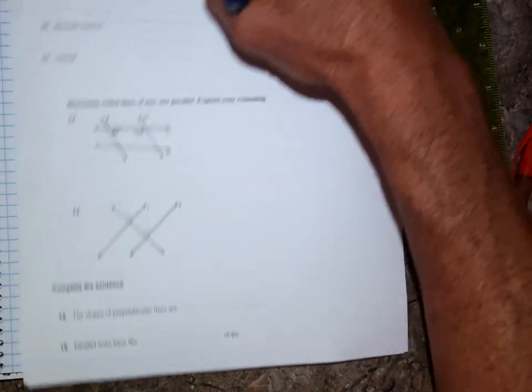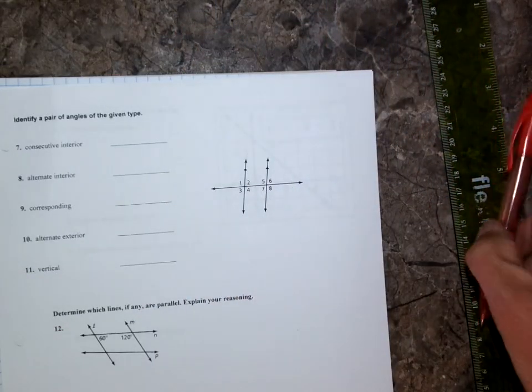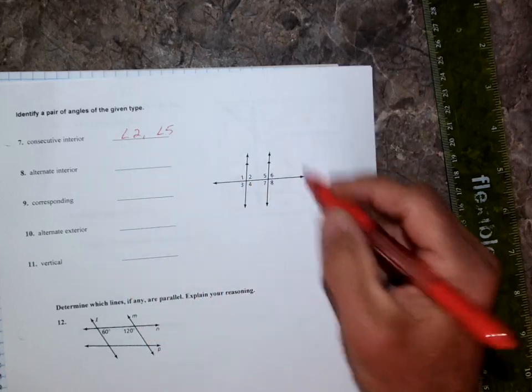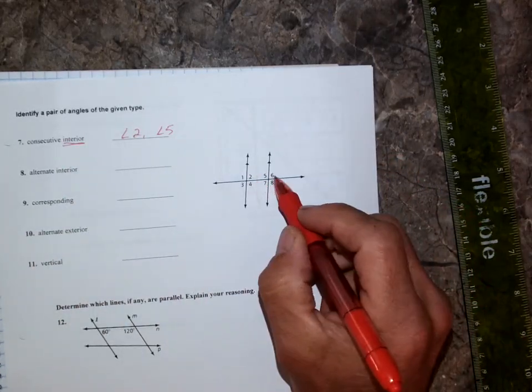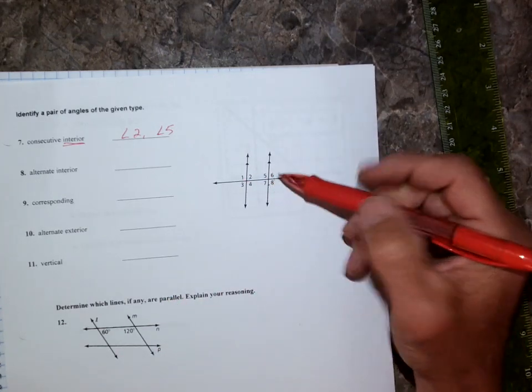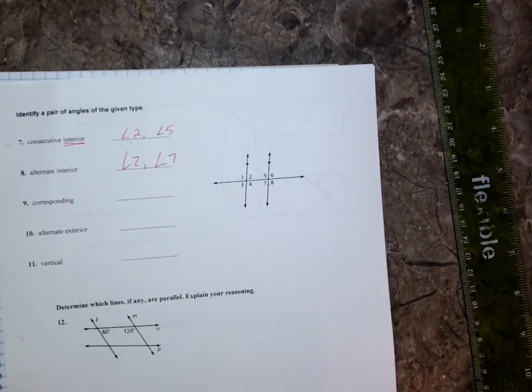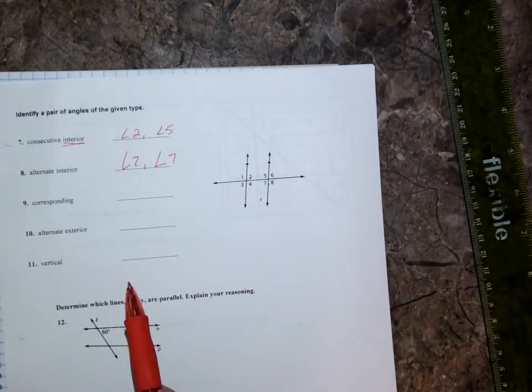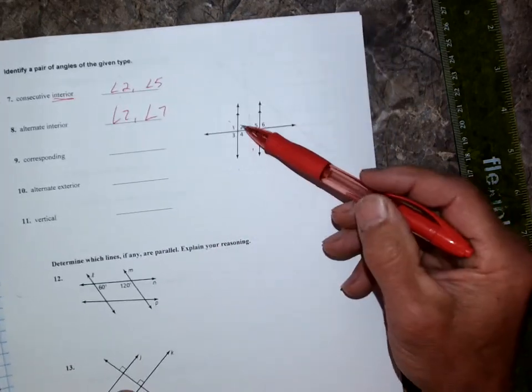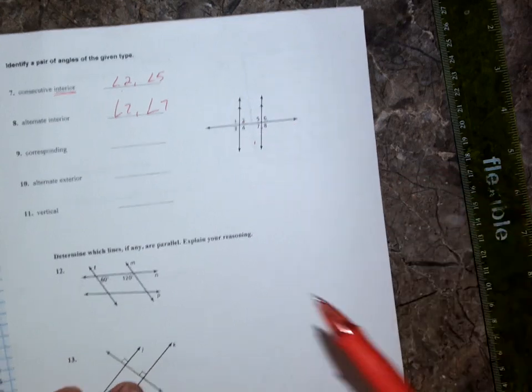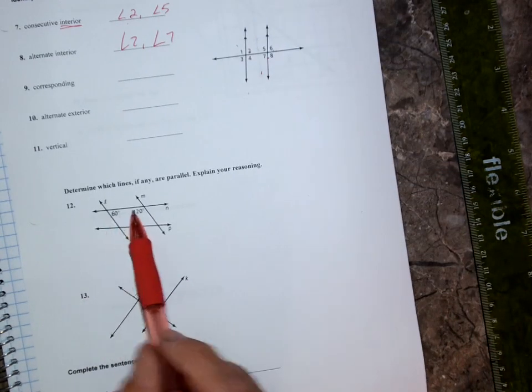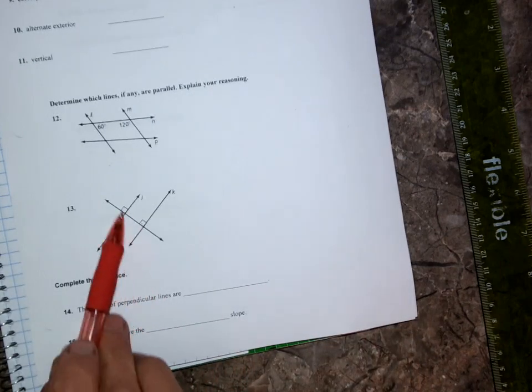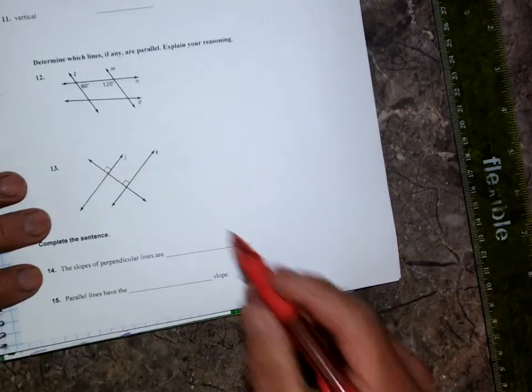Consecutive interior angles make the C, like angles 2 and 5. Alternate interior makes the Z pattern, probably 2 and 7. Corresponding makes the F, maybe 2 and 6 or 4 and 8. Alternate exterior like 1 and 8. Vertical makes the V, like 2 and 3 or 1 and 4. Number 12: these add up to 180, so l is parallel to m. Number 13: those two are parallel because of the 90-90.